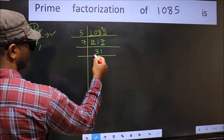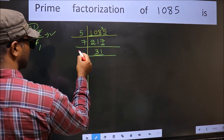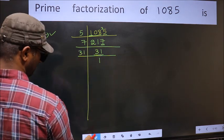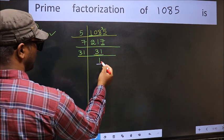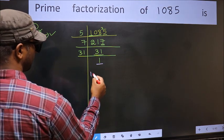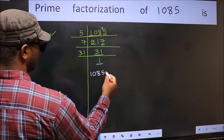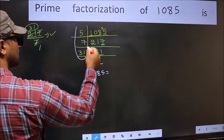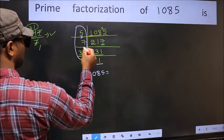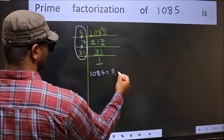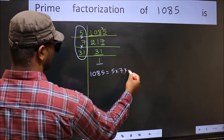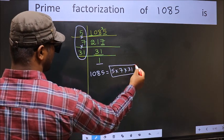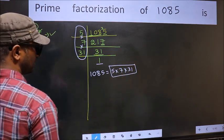Now we have 31. 31 is a prime number. So 31 times 1 is 31. So we got 1 here. So the prime factorization of 1085 is the product of these numbers. That is 5 into 7 into 31. So this is the prime factorization of 1085.